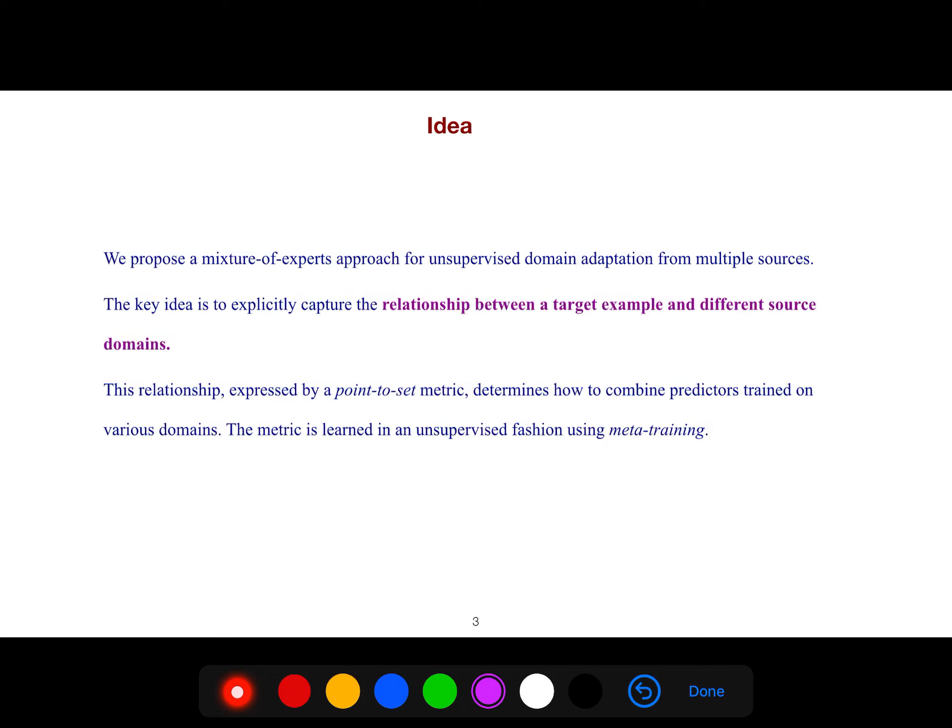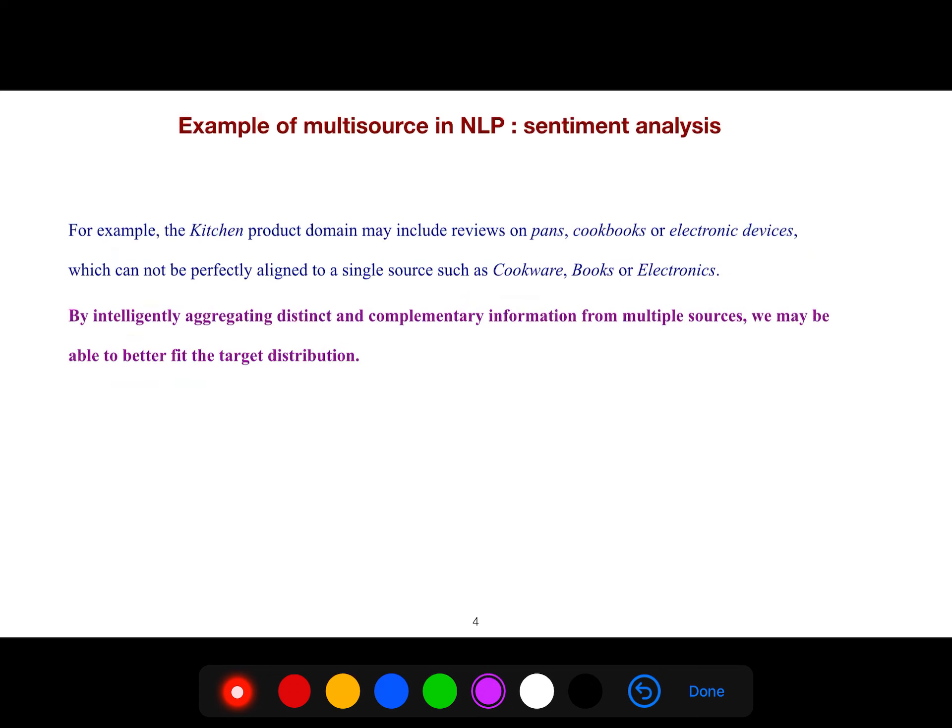The metric determines how to combine predictors trained on various domains. The metric is learned in an unsupervised fashion using meta-training. For example, the kitchen product domain may include reviews on pans, cookbooks, or electronic devices which cannot be perfectly aligned to a single source like cookware, books, or electronics. By intelligently aggregating distinct and complementary information from multiple sources, we may be able to better fit the target distribution.